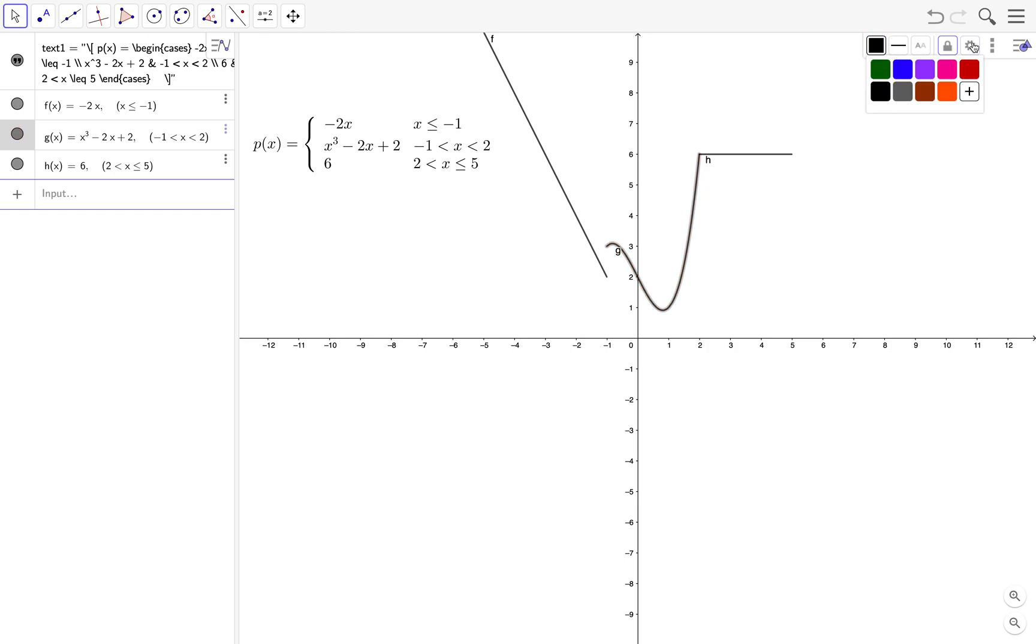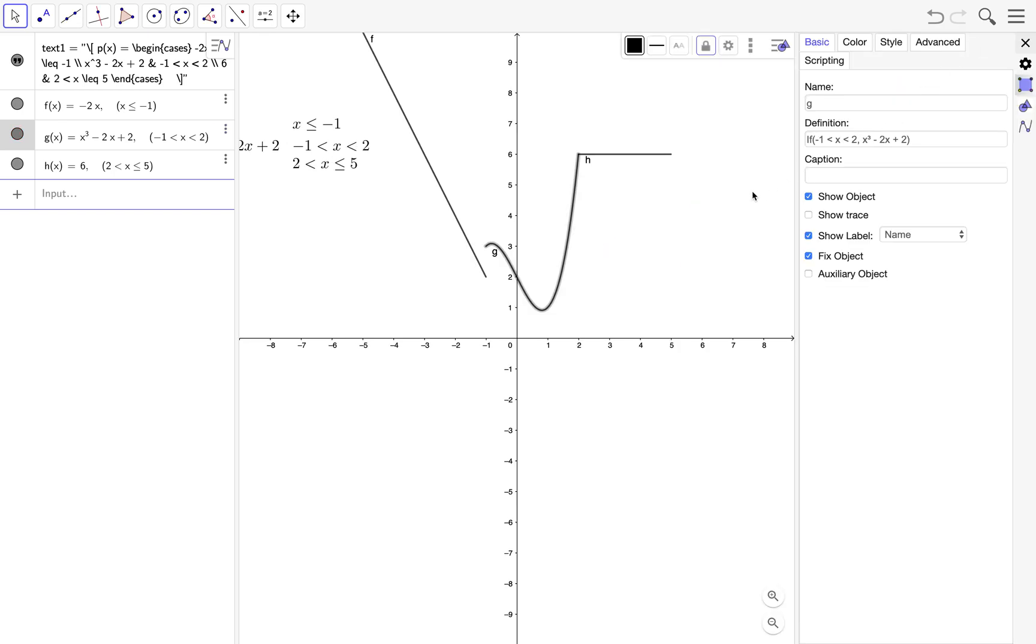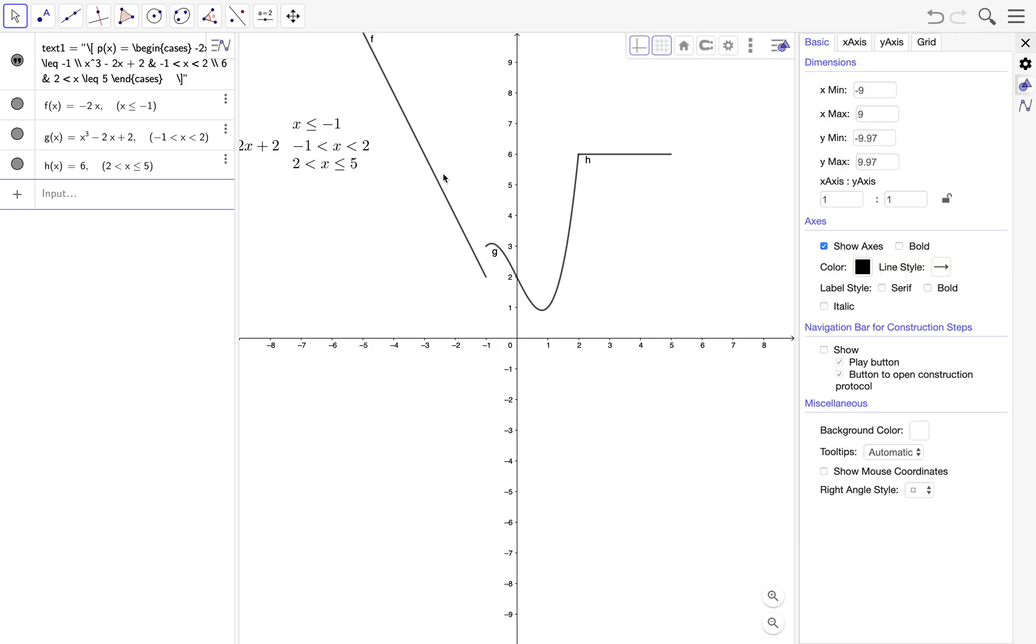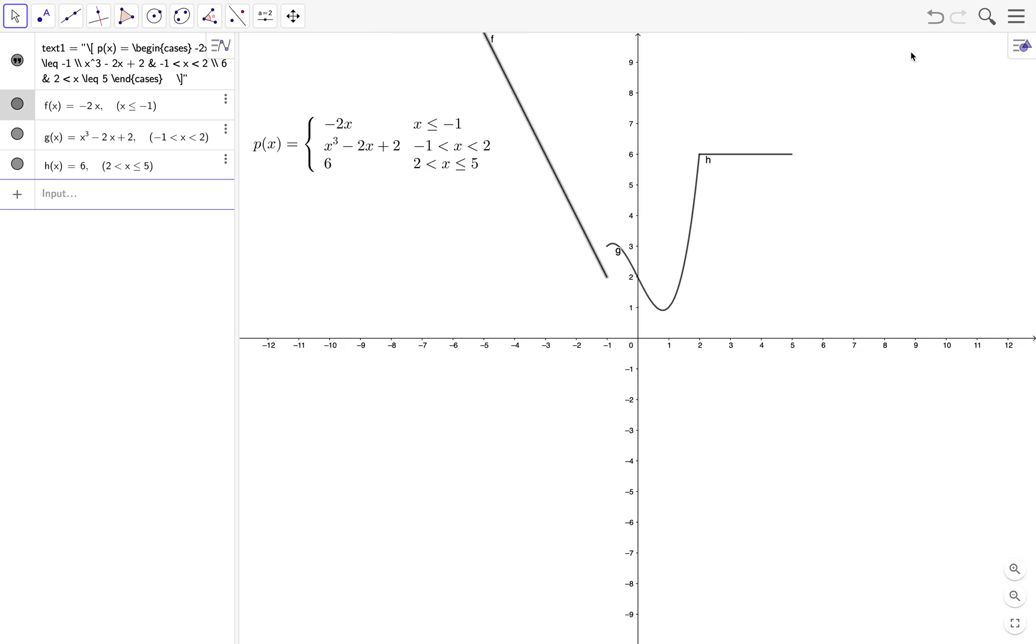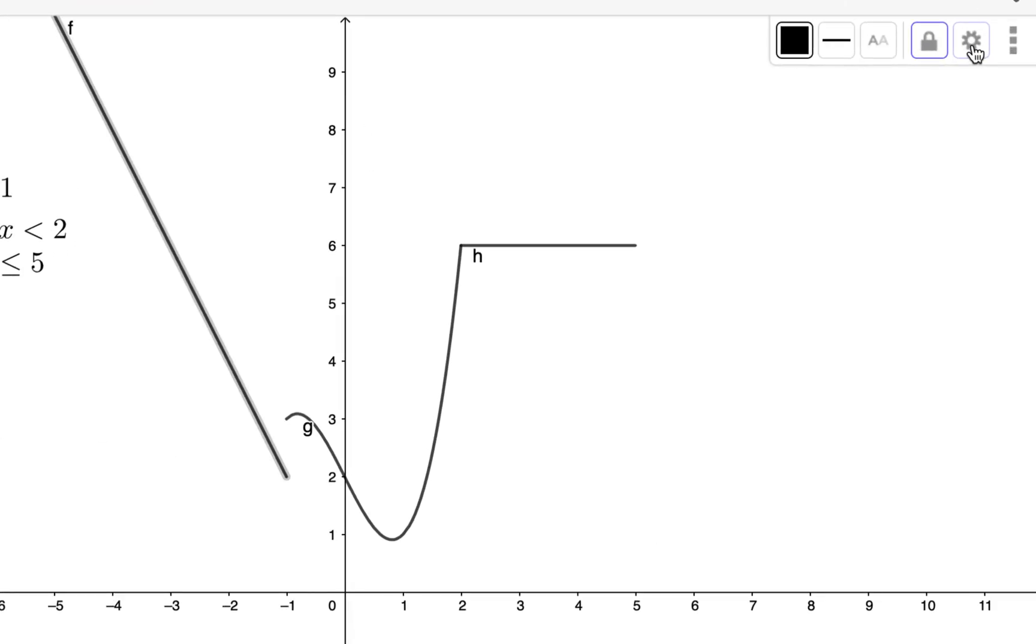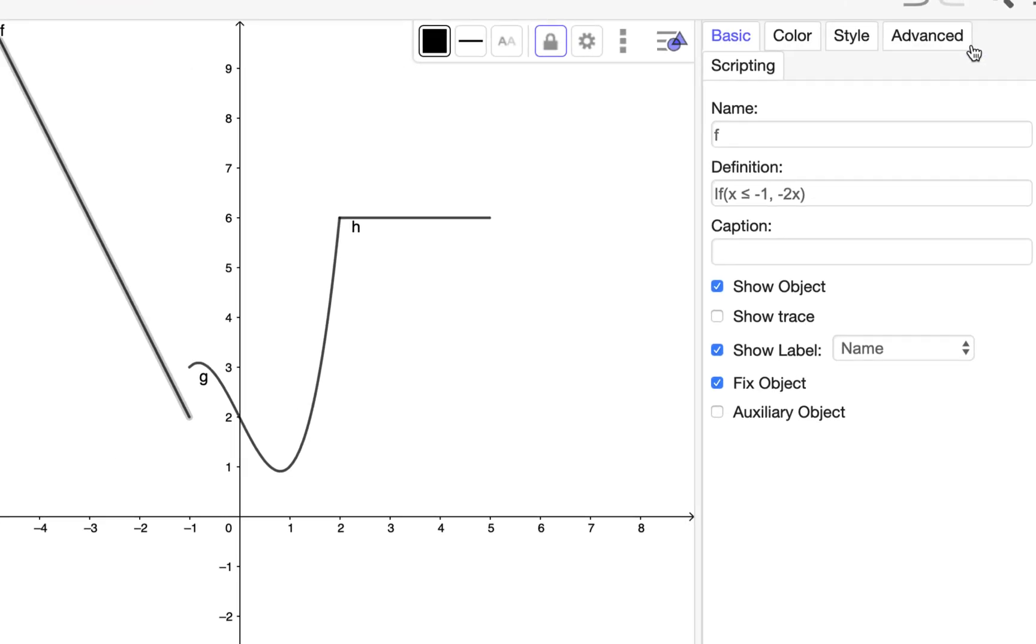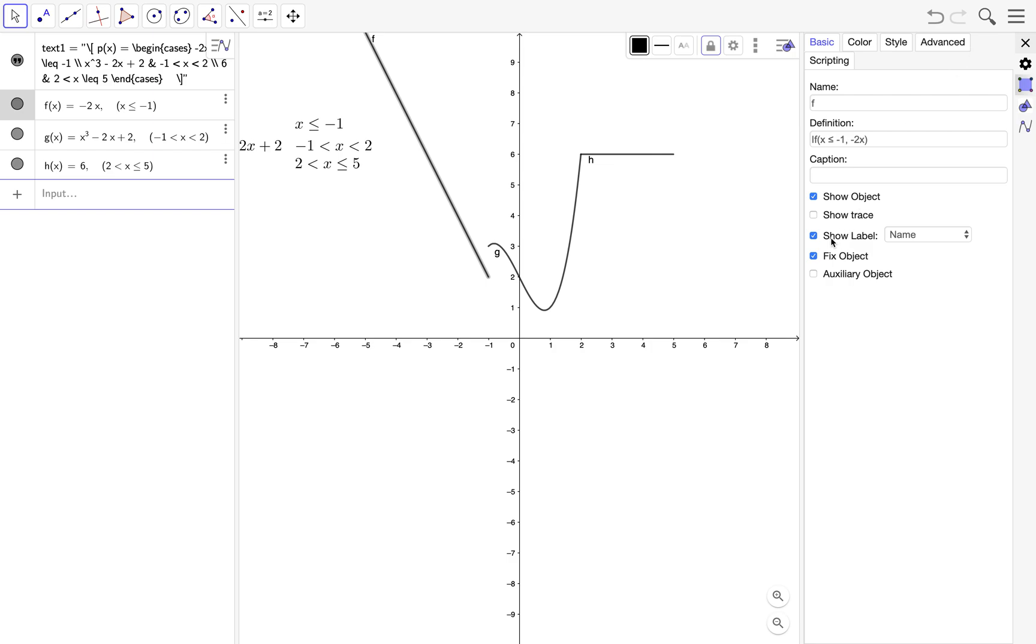And then we want the labels hidden. So we click one of the functions and if you didn't see it go to the style bar and then go to the gear. And then click on show label. You have to uncheck this checkbox. We do that to all functions.